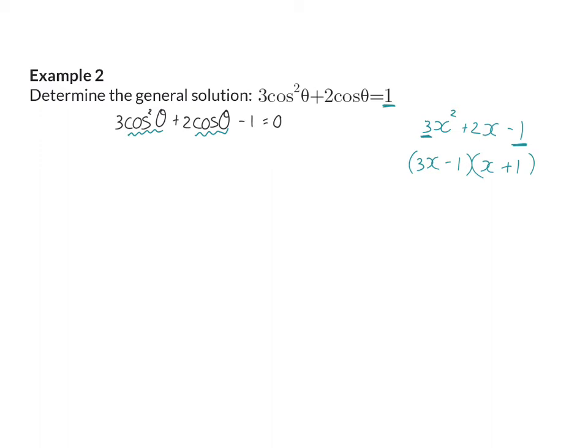I'm reminding you that you can always quickly check your factorization. Multiplying the closest two will give us minus 1x. Furthest two is plus 3x. And when you add these two up, you need to get your middle term, which in this case is plus 2x. So to rewrite this back in terms of trigonometry, I will have 3 cos θ minus 1 and cos θ plus 1.